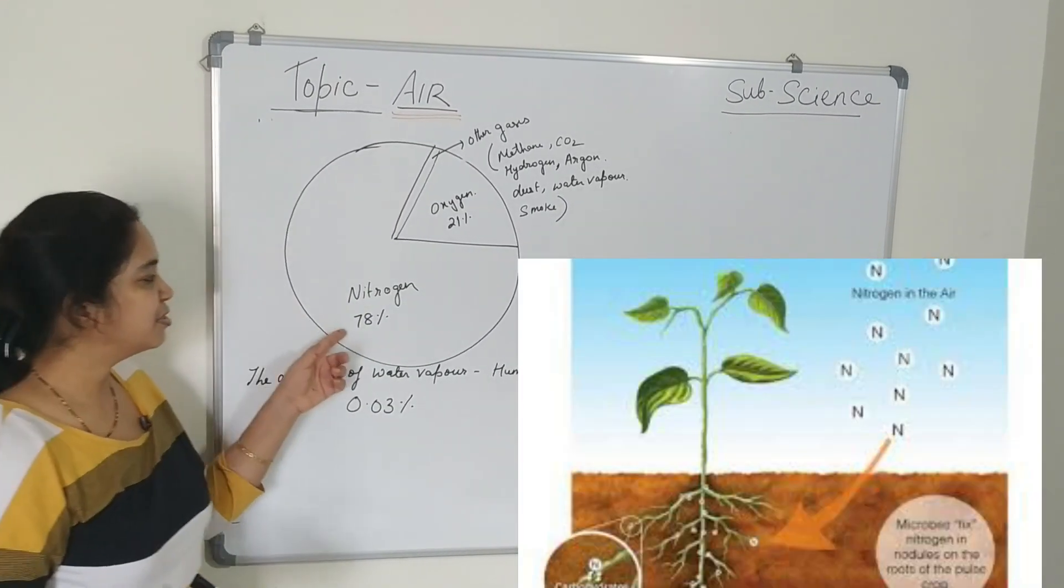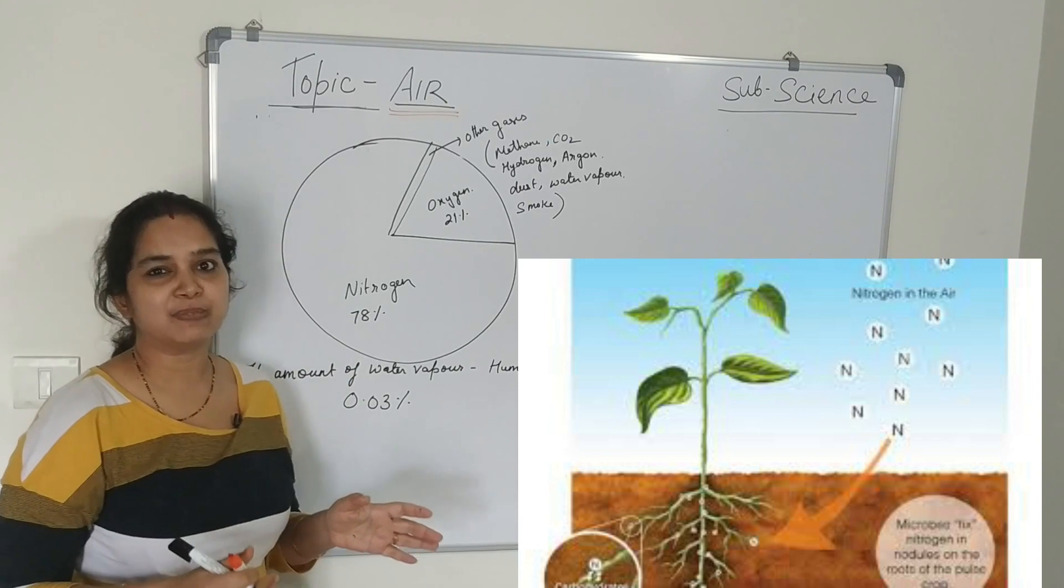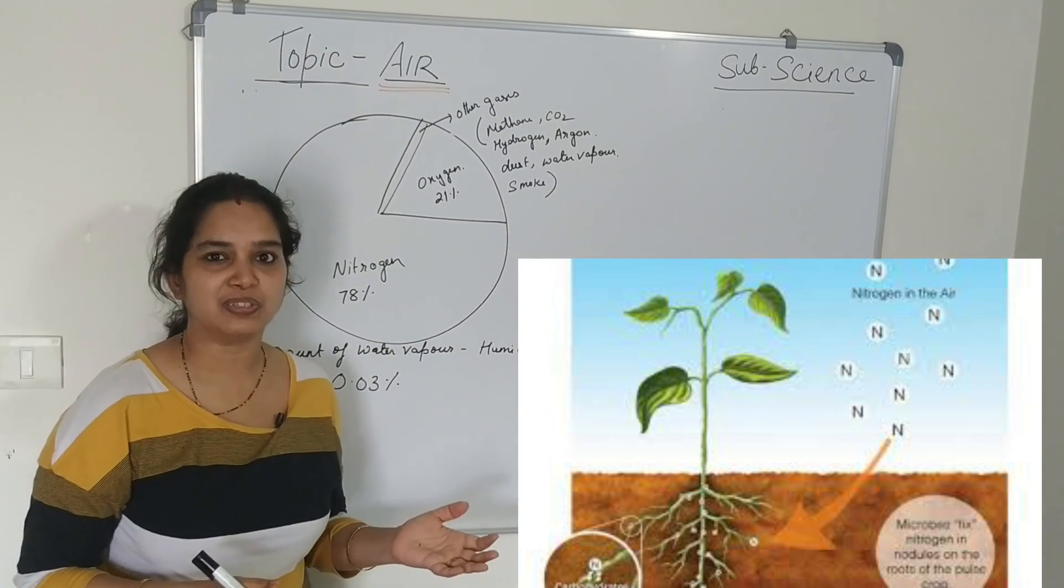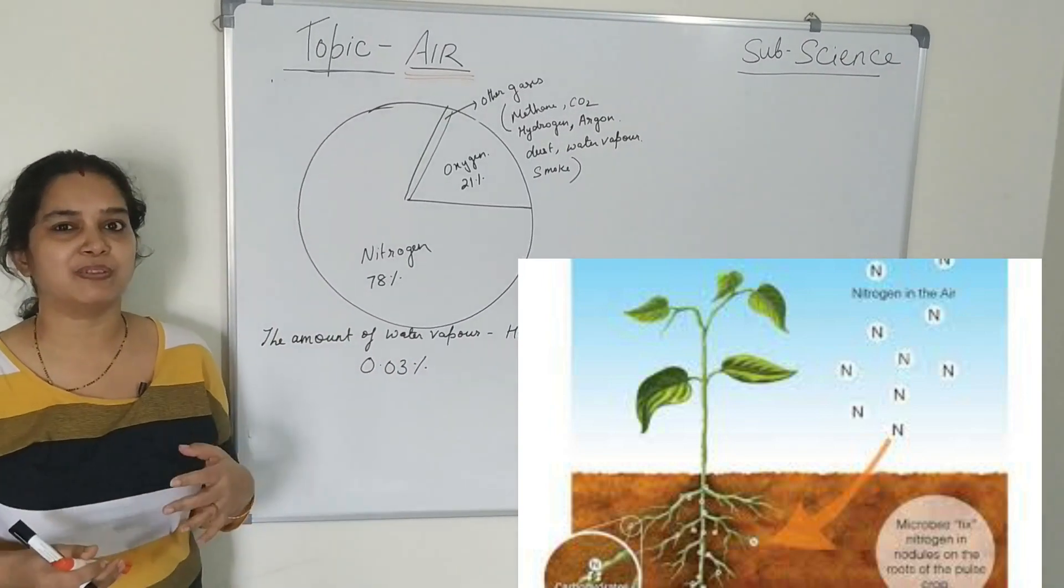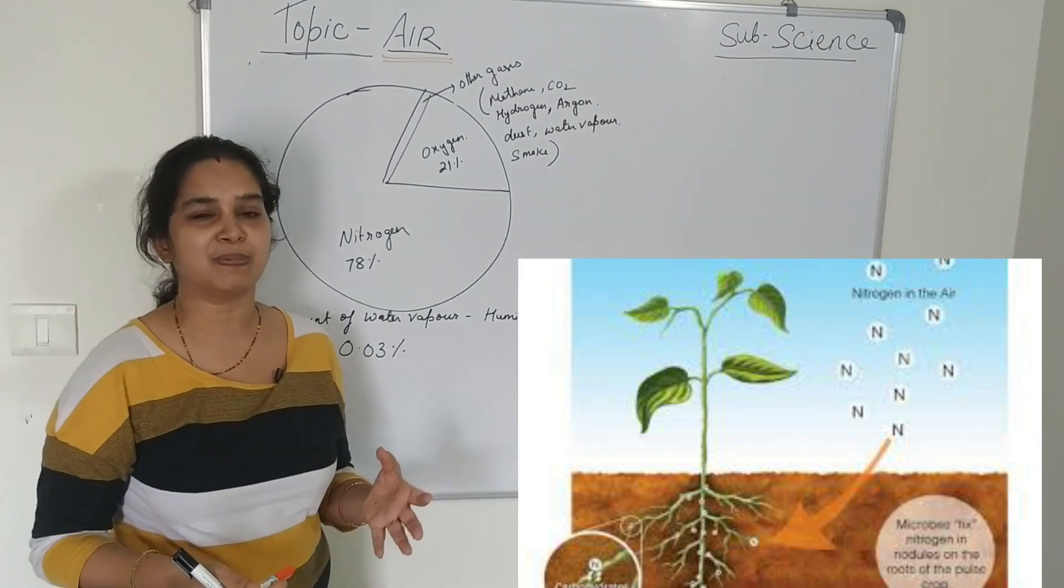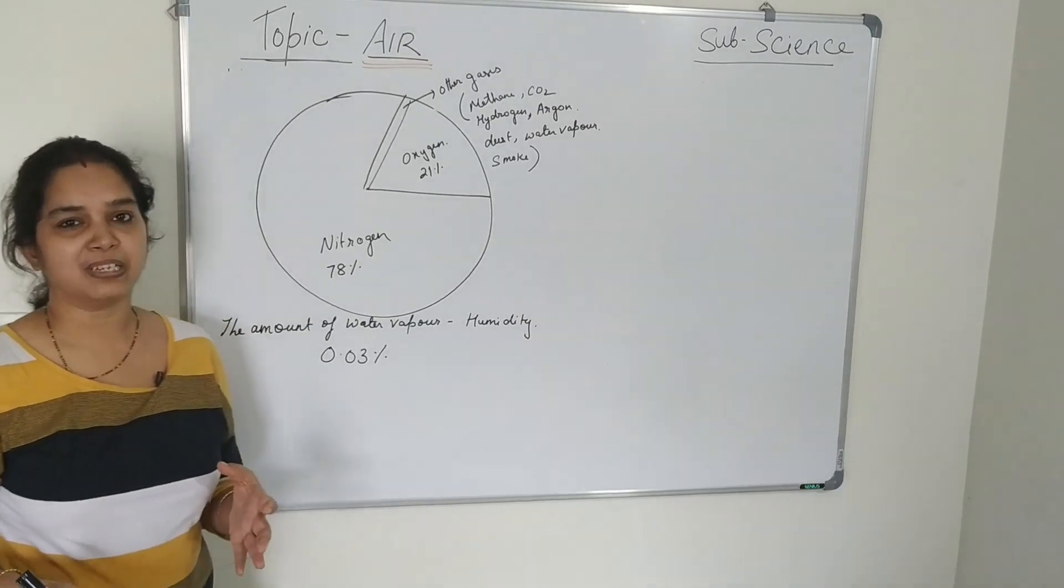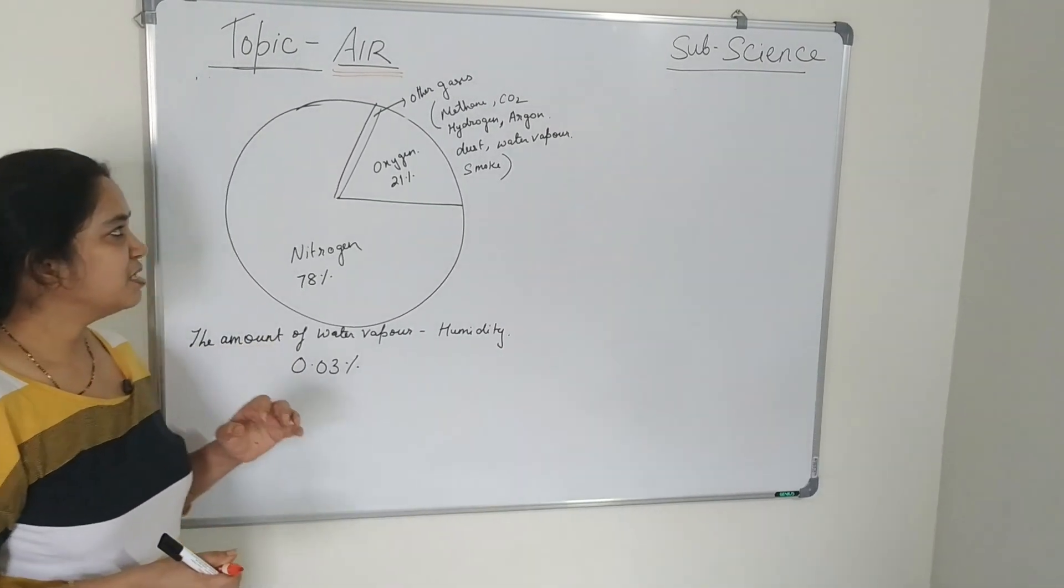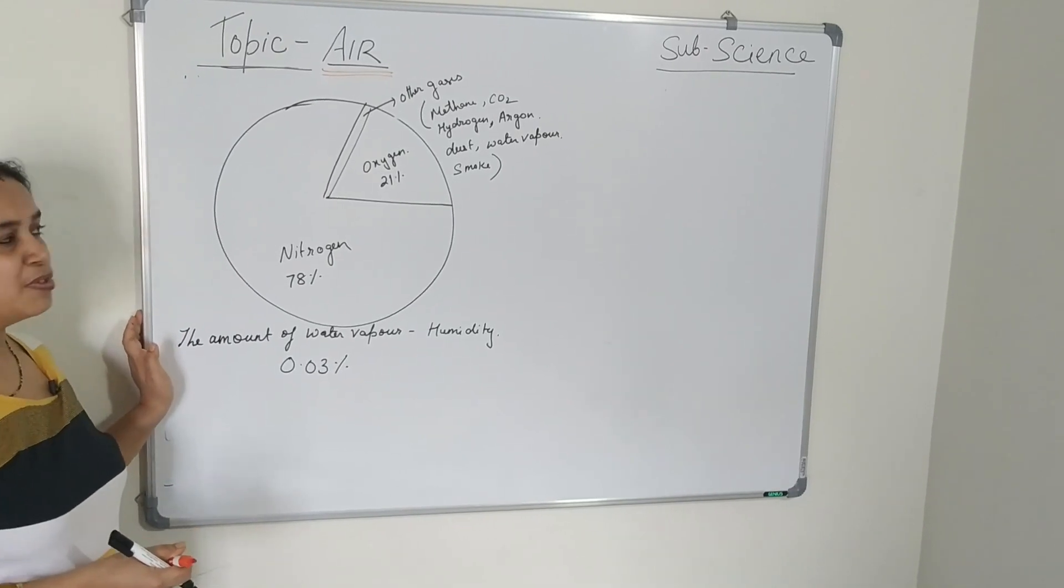And nitrogen is generally fixed by some bacteria that is present in the soil. They fix the atmospheric nitrogen and make it available for some plants like the leguminous plant. And then they are used by it. Nitrogen is also used in the fertilizer. So these are all about the composition of air.